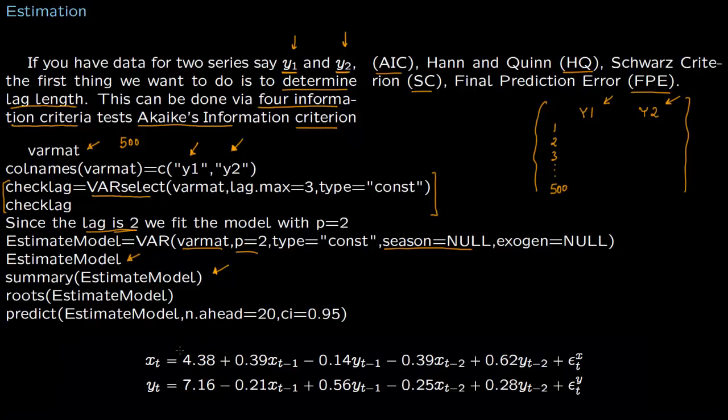These values are coming out. Let us write these values. This is the value which I ran in the previous simulation. So you get first variable 4.38, 0.39, 0.14, 0.39, 0.62, and the error term. These are pretty close to the values which we started with but these are not the exact values we had for the simulation model VAR.